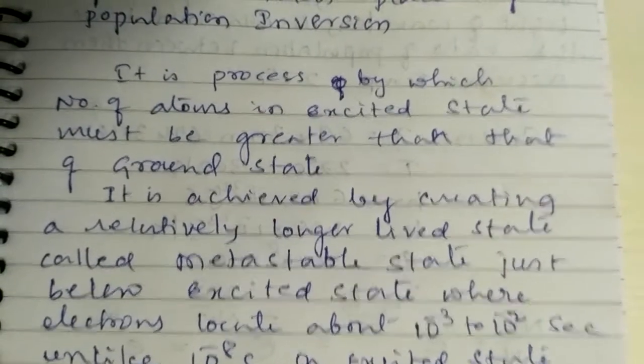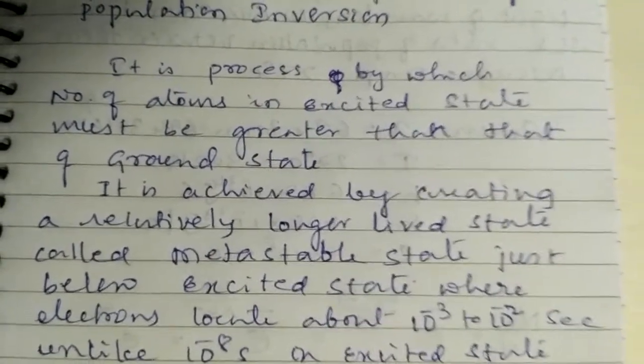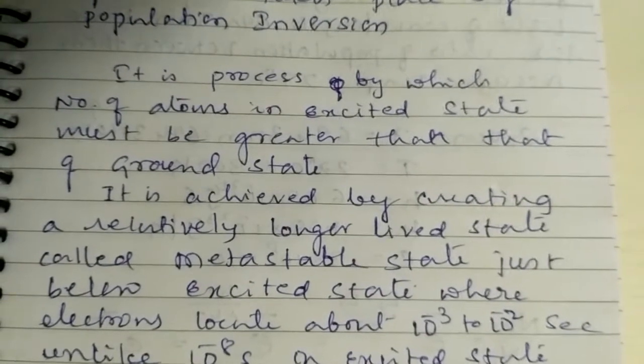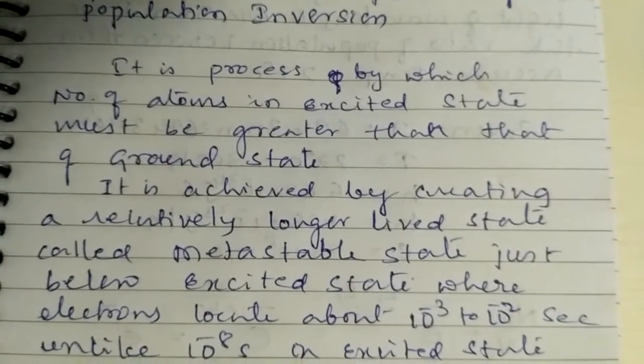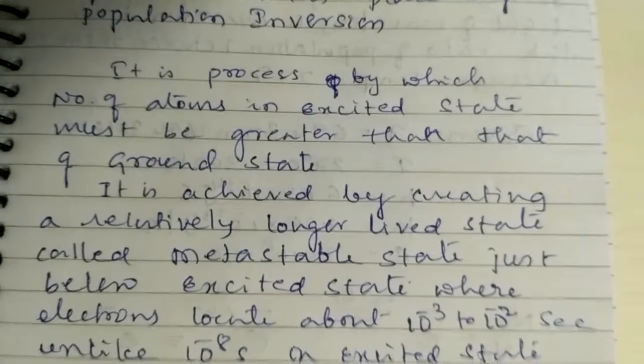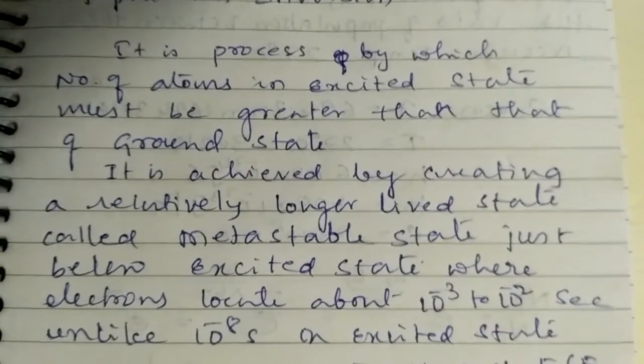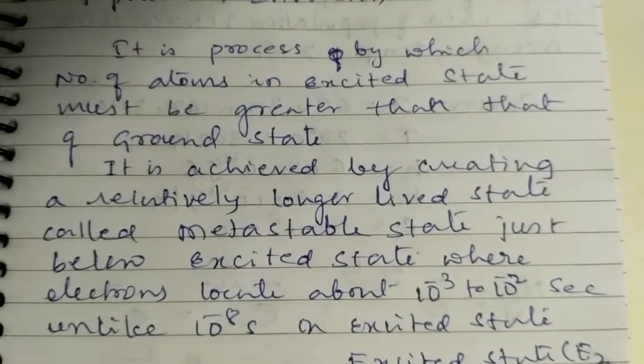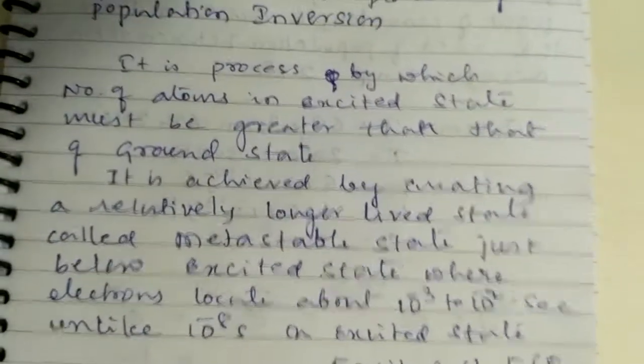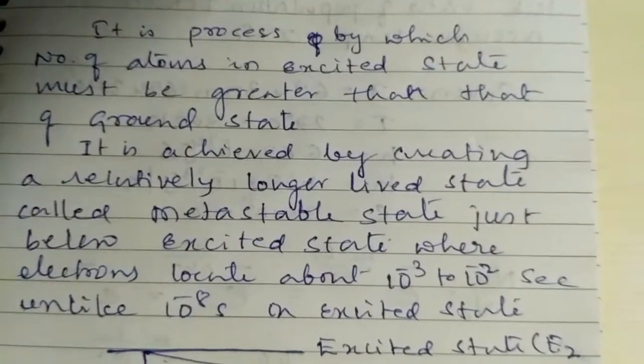By the application of electromagnetic energy, electrons go to the excited state, which is a short-lived state, and they come down to the metastable state, as shown in the figure, which is a relatively longer-lived state.